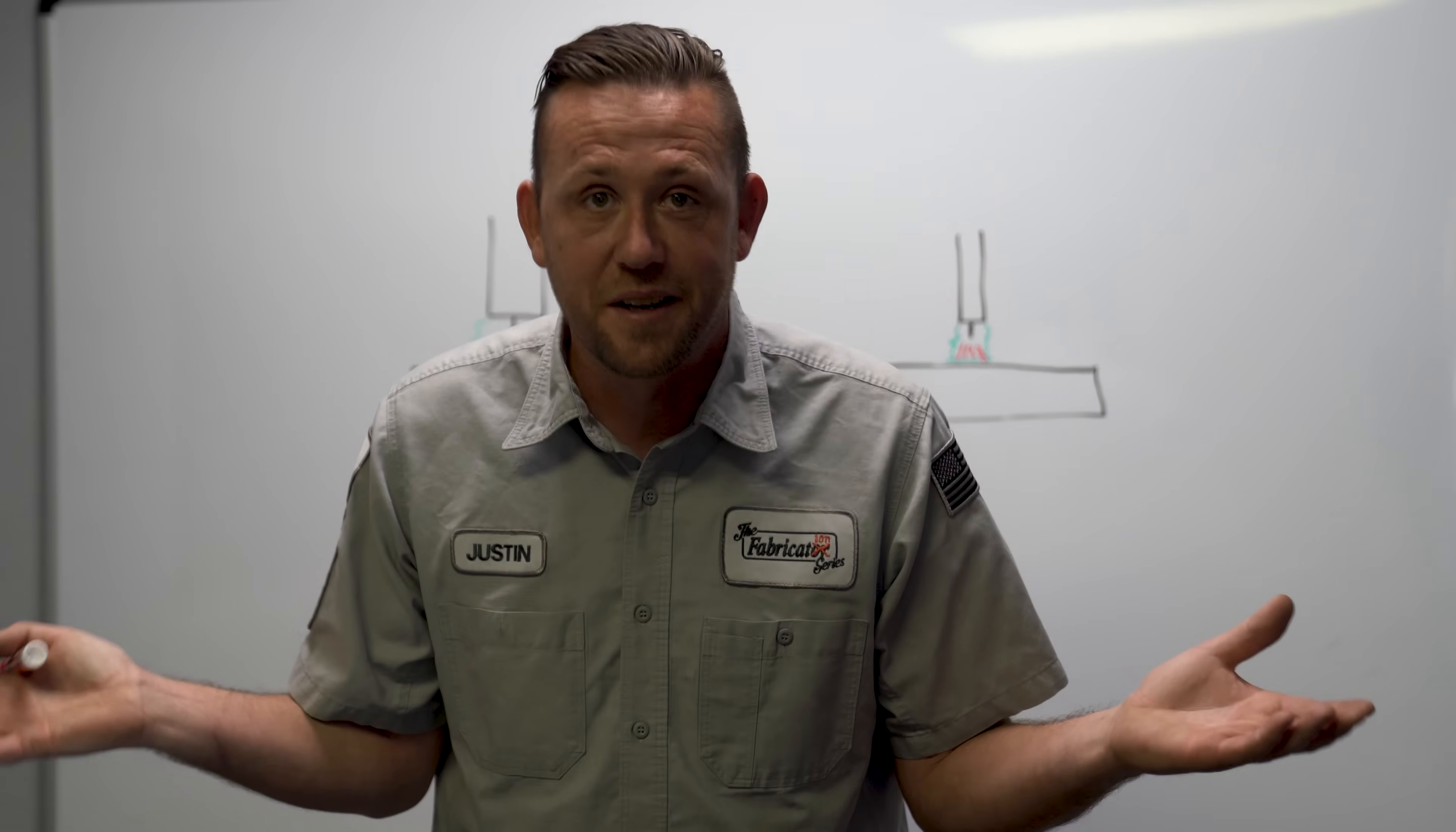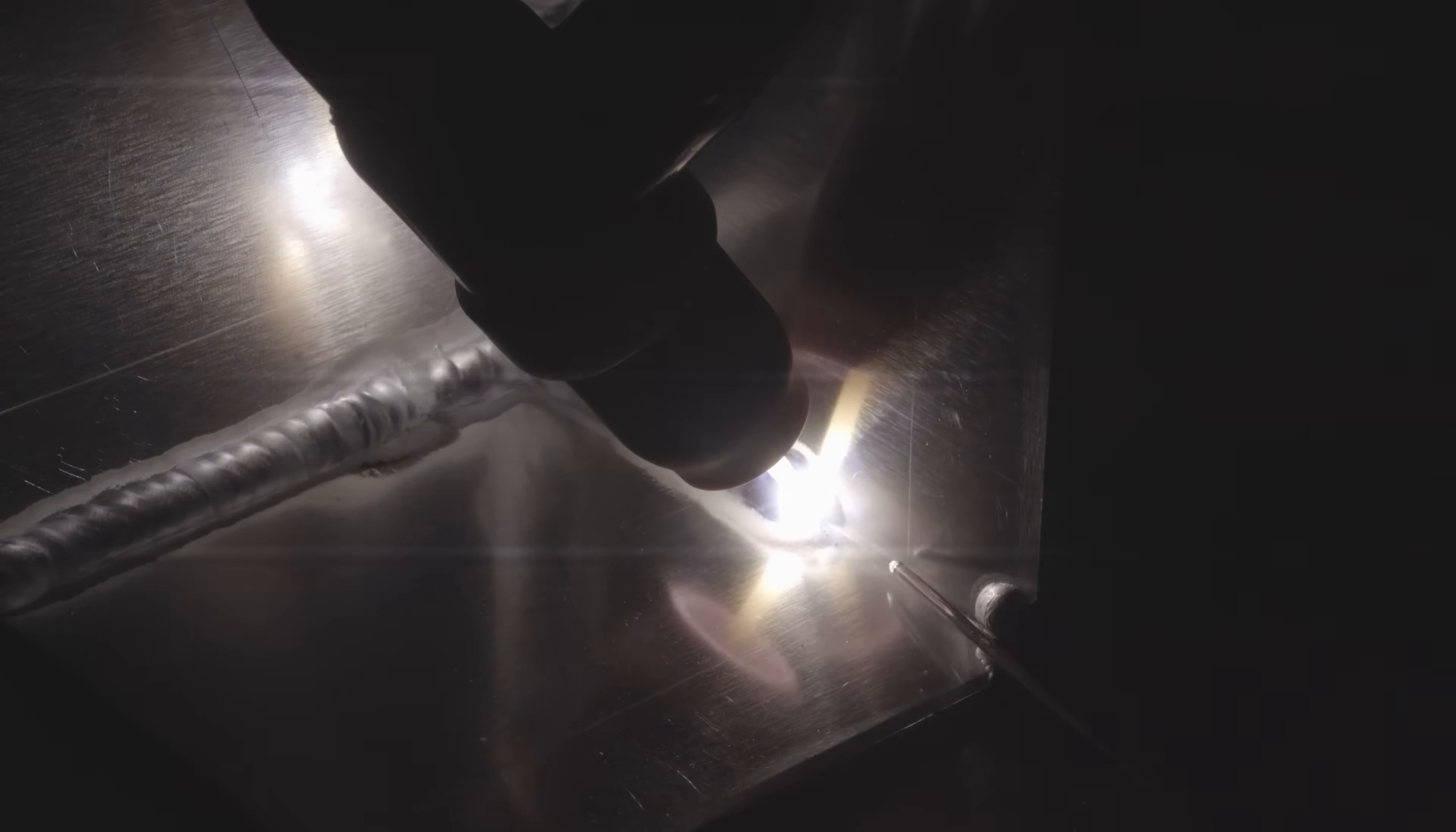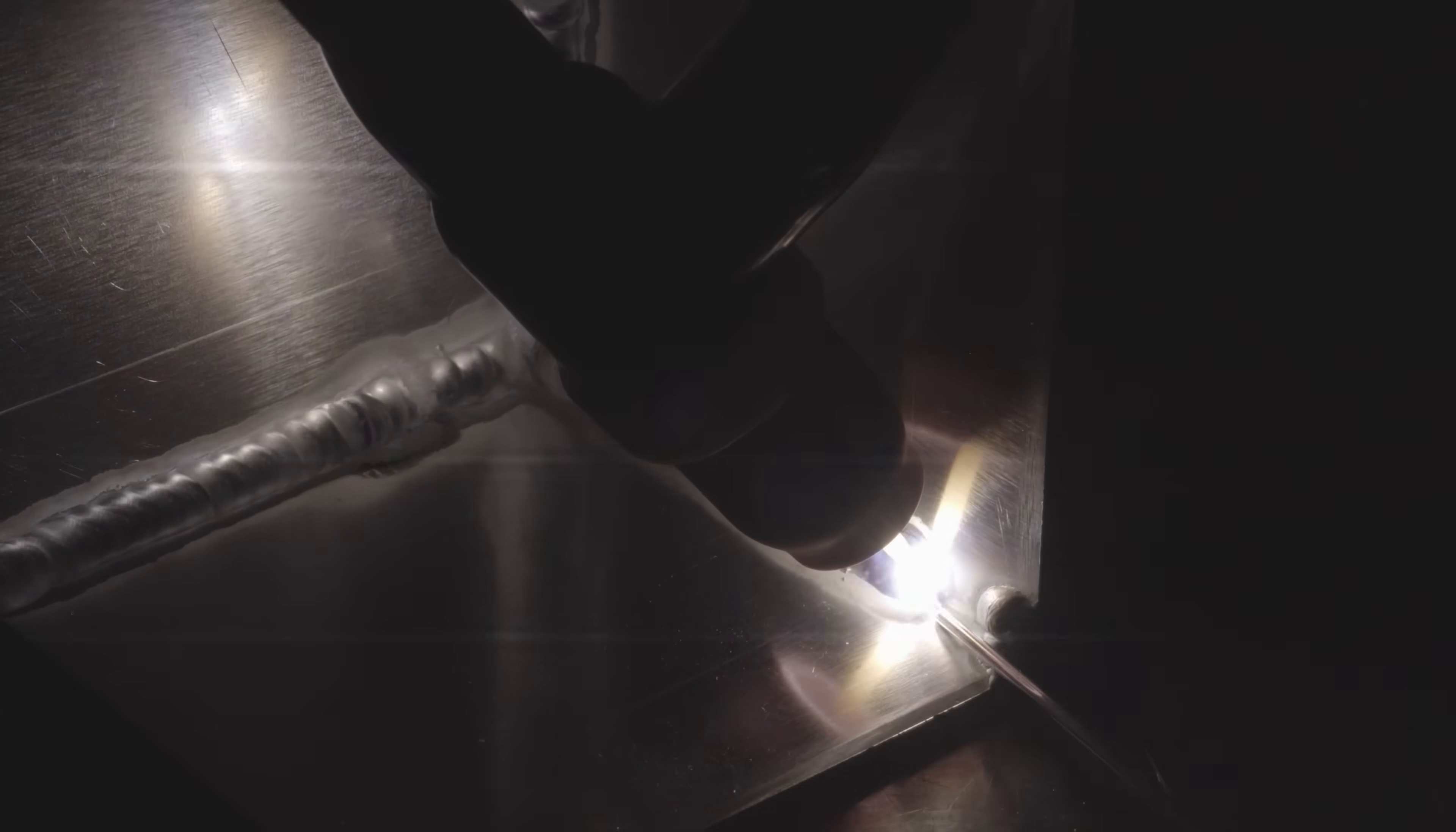One more thing worth mentioning is tight spaces. A number 8 gas lens is a pretty large cup, which may hinder your vision on a weld pool in a tight corner. The solution is to increase the stick out a little bit on larger cups, but that actually increases the size of the gas envelope, which brings us right back into the same issues. A smaller number 5 standard cup is much better at getting into those tight spaces without obstruction.